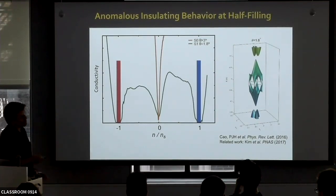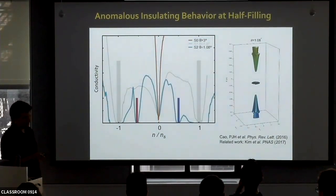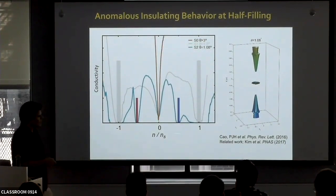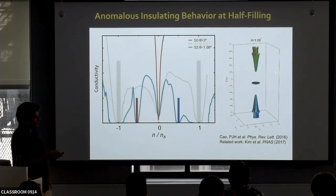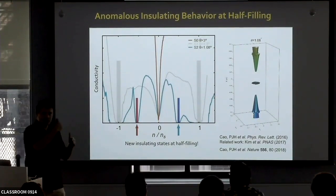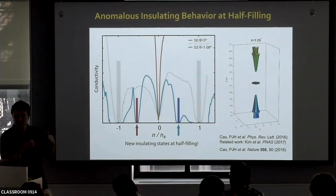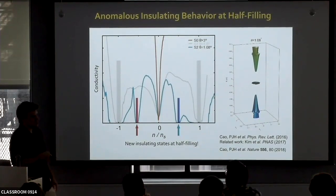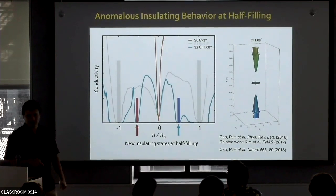Let me show you what happens when you measure a magic-angle device — this data for a device with 1.08 degrees twist angle. Near charge neutrality, this still looks Dirac-like, with V-shaped conductivity. You have insulating behavior when you completely fill or completely empty your bands because of the large gaps. But notice that at half as many electrons in your conduction band, or half as many holes in your valence band as needed to fully fill these bands, you also get insulating states. The system should be a metal, but you get an insulating state there.